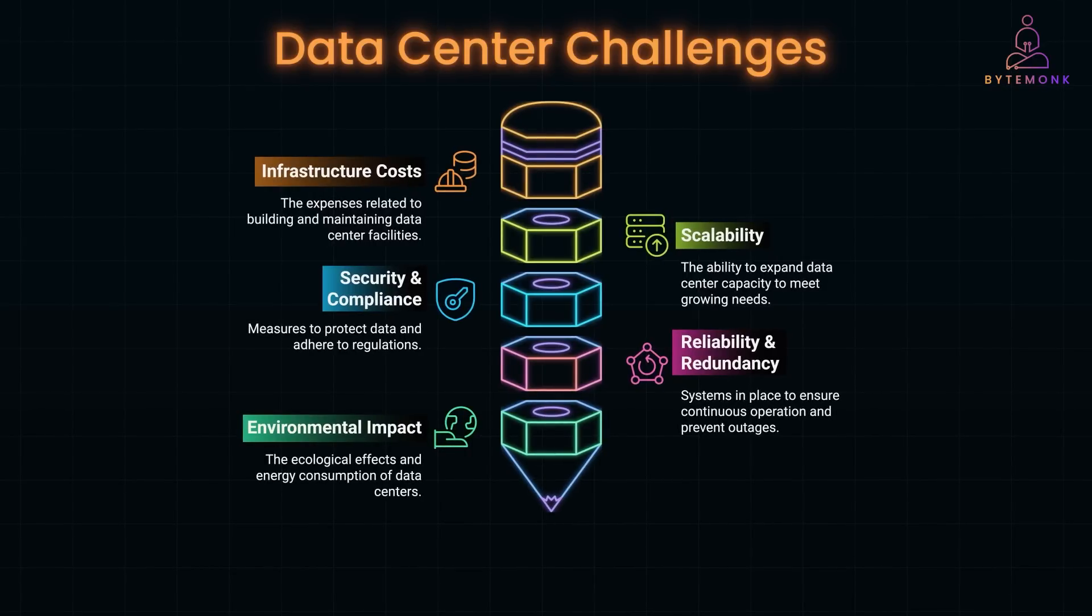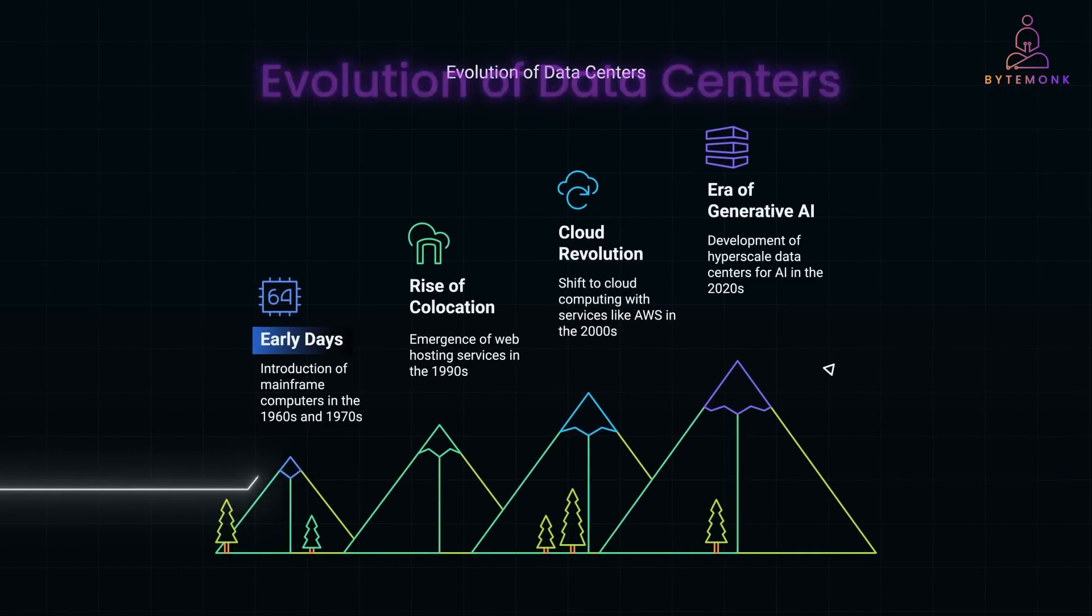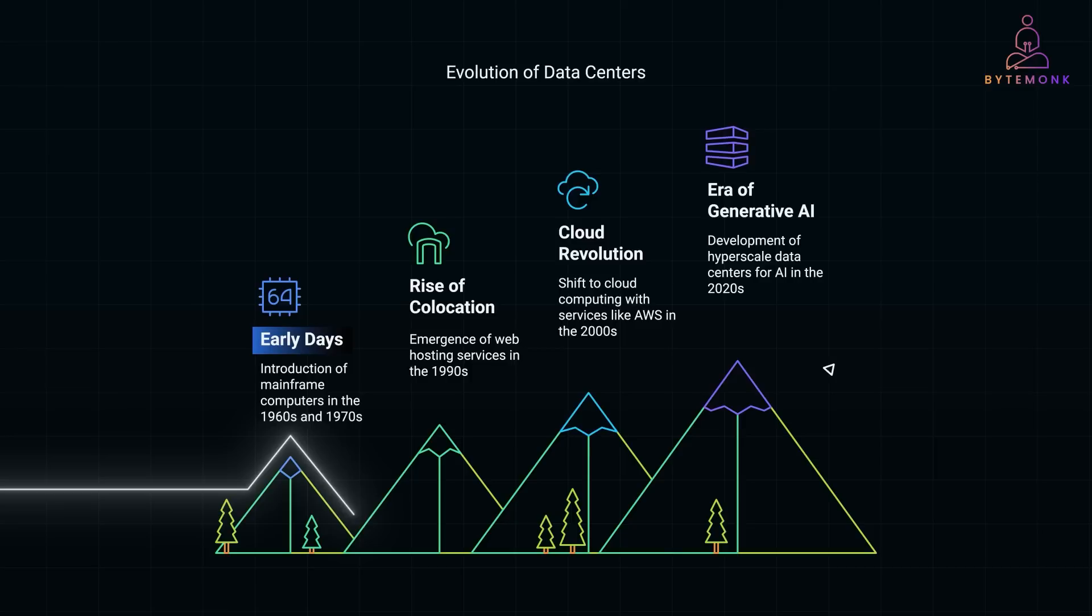Over time, data centers evolved from small localized setups to enormous highly optimized facilities. In the early days in the 1960s and the 70s, computing was dominated by mainframes. Huge room-sized computers that were used by large organizations like governments, banks, and universities. Companies could even build their own to host their websites, emails, and internal systems. But these were expensive to build and maintain, and they required a lot of physical space, cooling systems, and IT staff to keep them running.